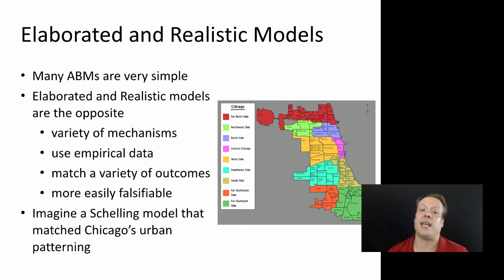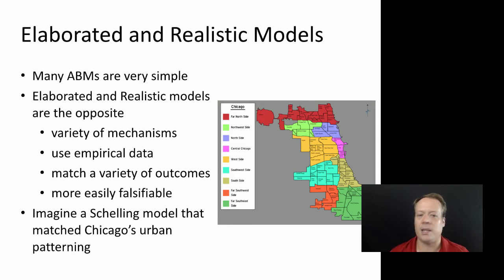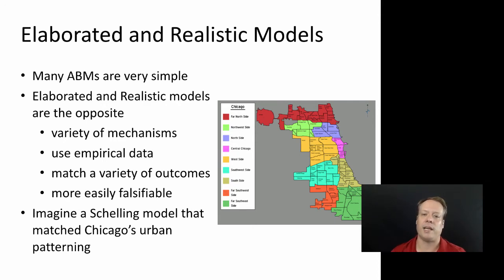A lot of realistic models are in some ways the opposite end of the spectrum. These are models that have a whole variety of mechanisms, they might use empirical data, they might match a variety of outcomes, and in some ways they're more easily falsifiable — because if the model doesn't match up with real data patterns as they unfold, then we know there's something wrong with them. So they have a lot of benefits.